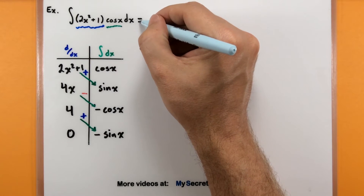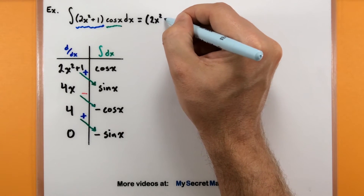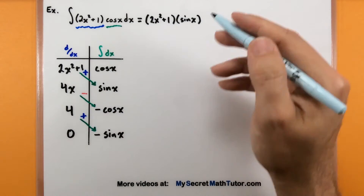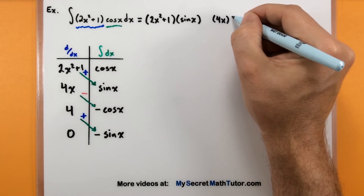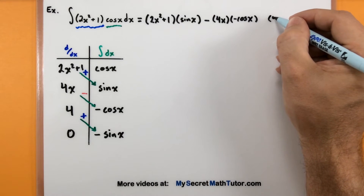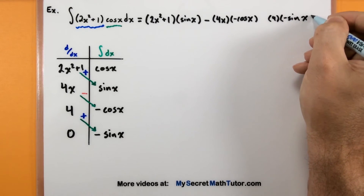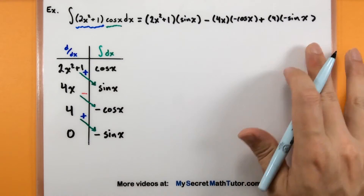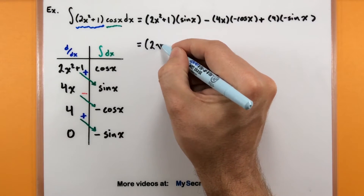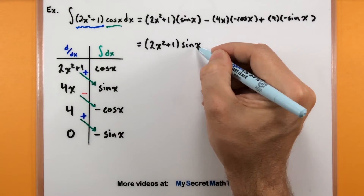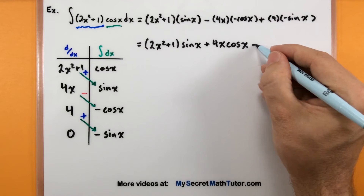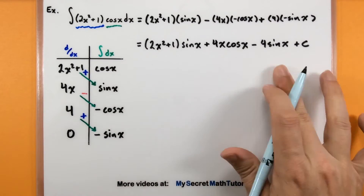Let's write down what we have. The first two pieces: 2x squared plus 1 multiplied by sine of x, with a plus sign out front. Next two pieces: 4x multiplied by negative cosine of x, connected with a minus sign. The last two pieces: 4 and negative sine of x, connected with a plus sign. Simplifying the double negatives: 2x squared plus 1 times sine of x, plus 4x cosine of x, minus 4 sine of x, plus c.